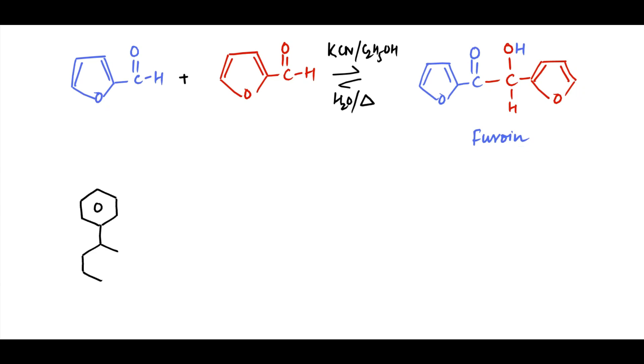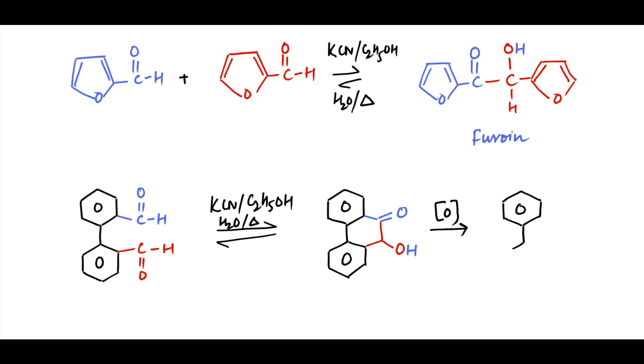Likewise this molecule has 2 aldehyde groups. In the presence of cyanide catalyst, this will undergo intramolecular benzoin condensation, so that donor part retains carbonyl and acceptor part has it changed to hydroxyl group. If this molecule is subjected to oxidation, the hydroxyl group being secondary is oxidized to keto group.